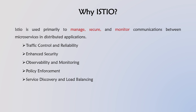Why is Istio important? Istio is primarily used to manage, secure, and monitor communication between microservices in distributed applications. Key reasons include: traffic control and reliability, security, observability and monitoring, policy enforcement, and service discovery and load balancing. In complex applications, controlling traffic between microservices is crucial. Istio enables traffic control and reliability features like load balancing, retries, timeouts, and traffic splitting, ensuring better reliability and fault tolerance in your application.